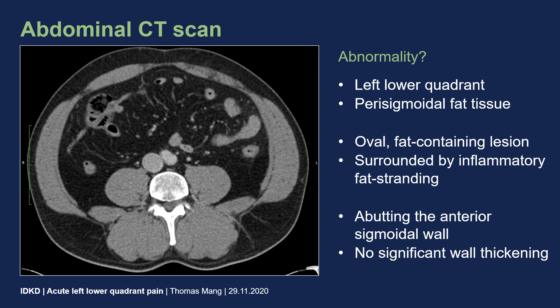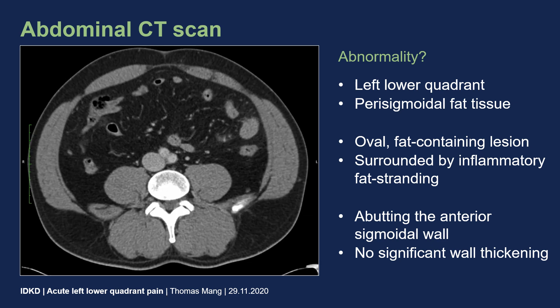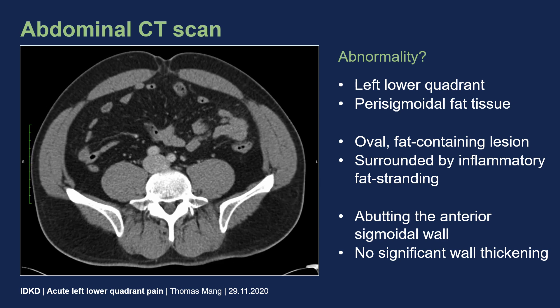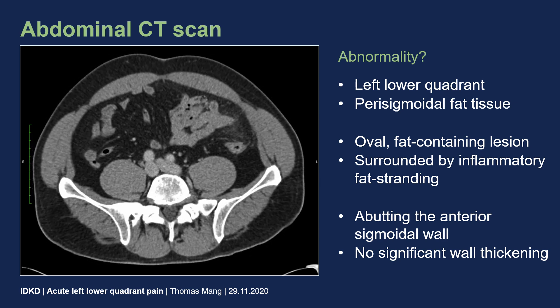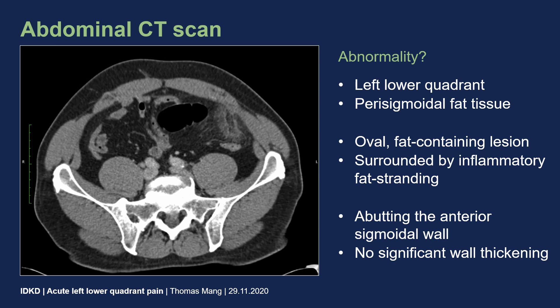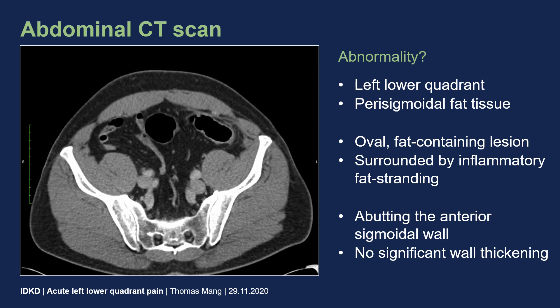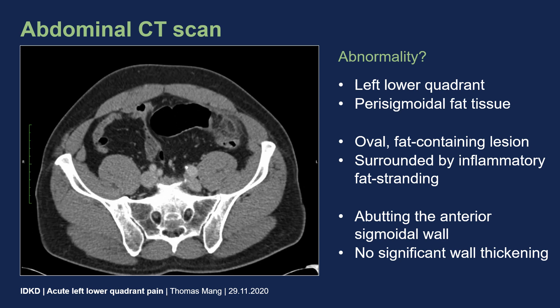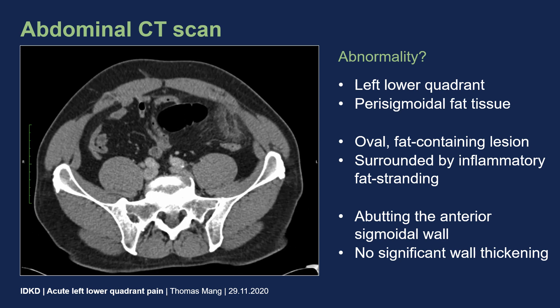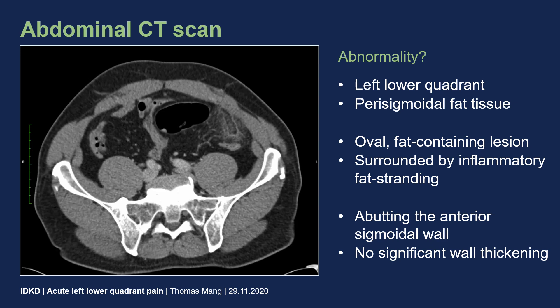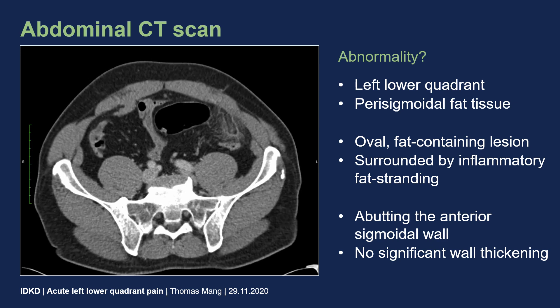Here are the CT images of the patient. The first step is to search for any abnormality within this dataset. I'm scrolling now towards the pelvic region, and there is an abnormality located within the left lower quadrant. It's located in front of the sigmoid colon in the perisigmoidal fat tissue. It has an oval shape, contains fat tissue, and is surrounded by fat stranding.